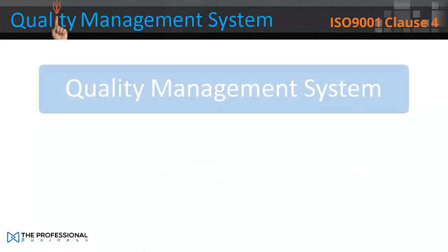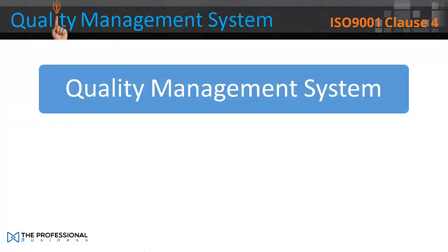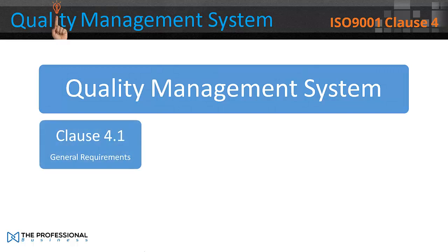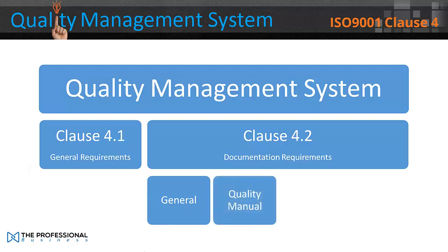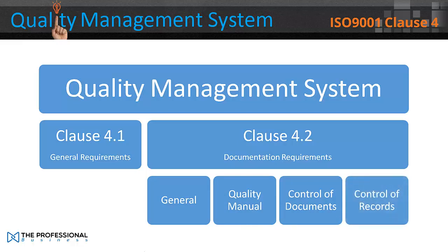All of these documents encompass the quality management system, which is made up of Clause 4.1 General Requirements and Clause 4.2 Documentation Requirements — which is made up of General, Quality Manual, Control of Documents, and Control of Records.